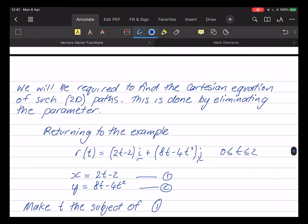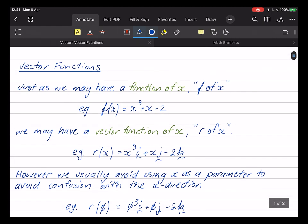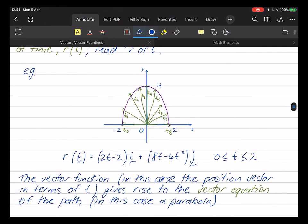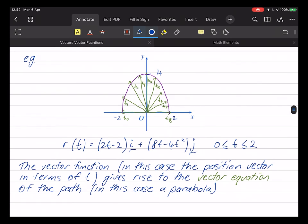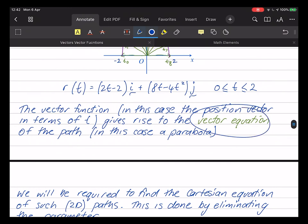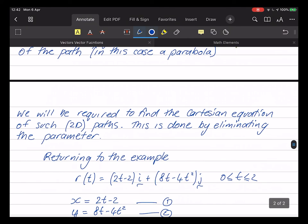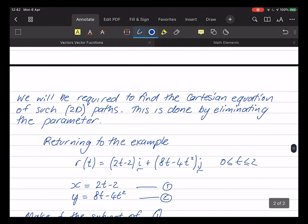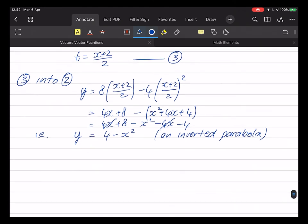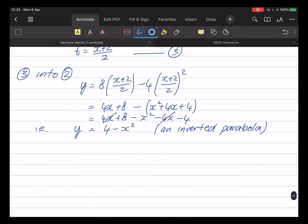Okay, so there we have it. Vector functions. So just as we can have a function in terms of x, f of x, I can have a function in terms of some other parameter. Here I have r of t. And as the parameter is changed, the vector, the position vector itself will trace out a path. And that path is known as the vector equation. And you'll be required to eliminate the parameter and get back to the Cartesian equation. All right, well that does it for this lesson. I'm Keith Johnston. Thanks for watching.